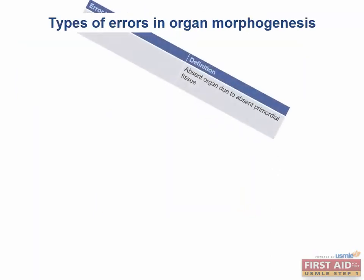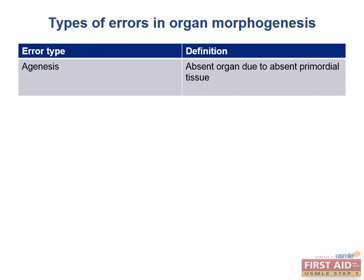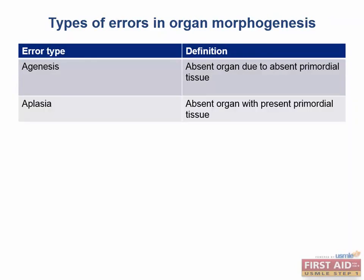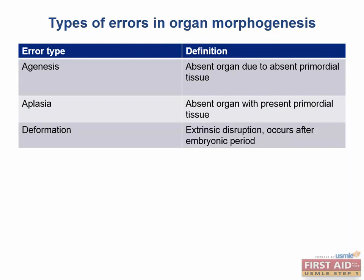For errors in organ morphogenesis: agenesis is when an organ does not form because the primordial tissue was never present — for example, agenesis of the corpus callosum. Aplasia is when an organ does not form but its primordial tissue was present, such as thymic aplasia in DiGeorge syndrome. A deformation occurs after the embryonic period (three to eight weeks) and is due to something outside of the fetus — for example, crowding in twins. Disruption is the secondary breakdown of previously normal tissue, such as amniotic band syndrome.